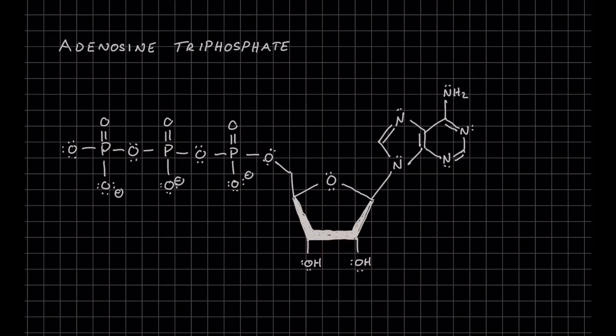The next thing we might want to take a look at are the different components of ATP. Our first component here, a little circle, is our nitrogenous base adenine.